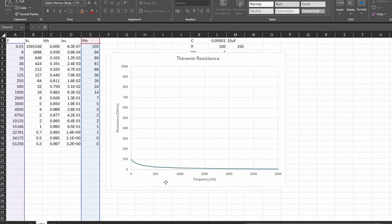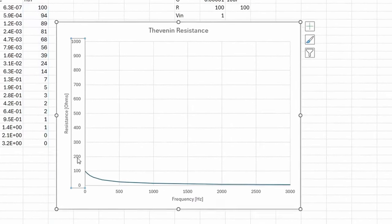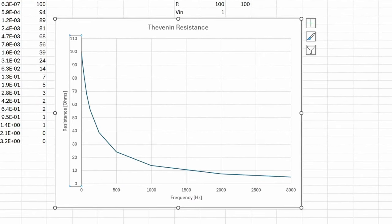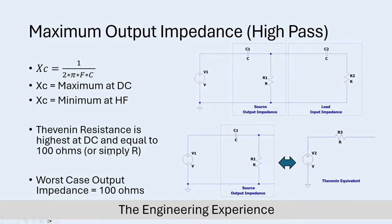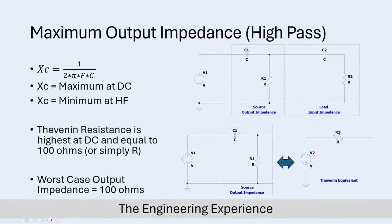The Thevenin equivalent resistance of this high-pass filter circuit is at a maximum of 100 ohms at very low frequency and only decreases as frequency increases. Similar to before, we can say the worst-case output impedance is simply the resistance in the circuit - in this case, 100 ohms.